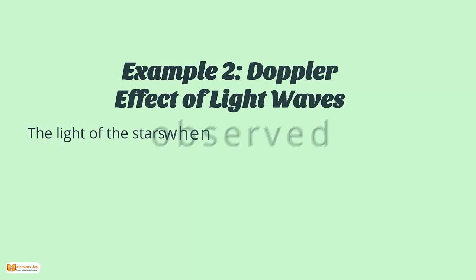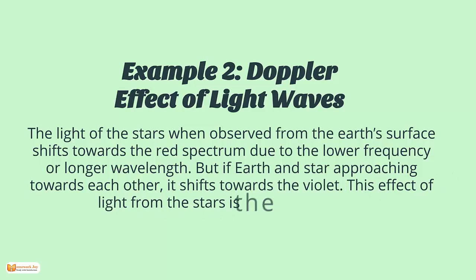Example 2: Doppler effect of light waves. The light of the stars, when observed from the Earth's surface, shifts towards the red spectrum due to the lower frequency or longer wavelength. But if Earth and a star are approaching towards each other, it shifts towards the violet.